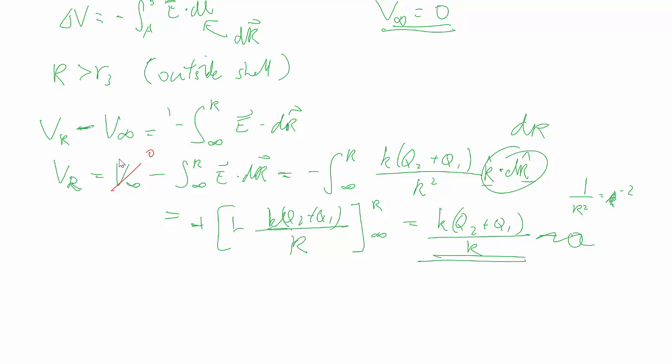And there you go. So this first part, as you might imagine, a spherical shell on the outside of that, you look at the total charge, and it acts like a point charge. So the electric field acts like a point charge, so the potential also acts like a point charge.